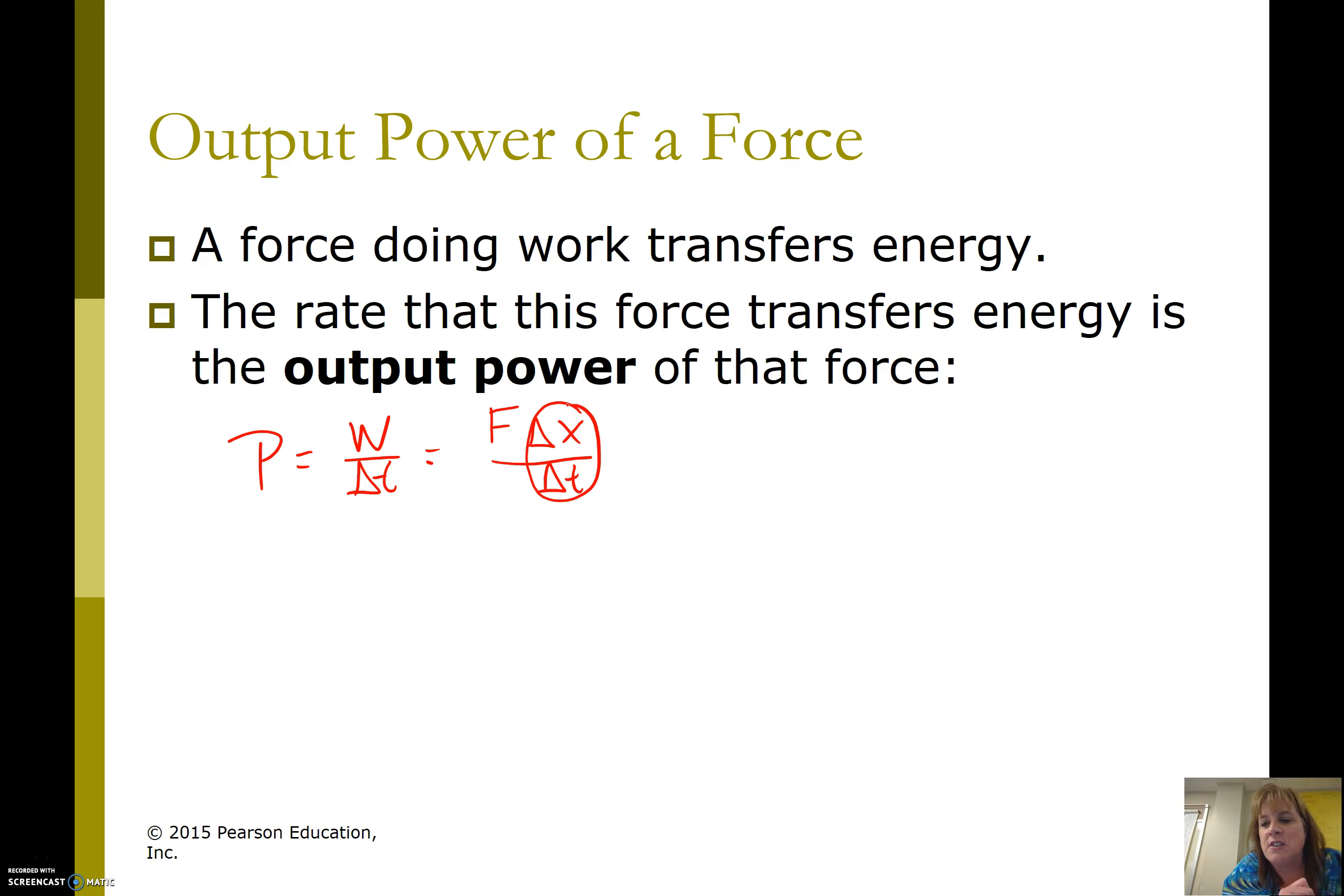What is the change in distance over change in time? That is the average velocity, or if it's constant velocity, that would be the velocity. So power, in terms of output power of a force, is the force applied times the average velocity. We have another equation for power: work over time, or force times velocity. It's best to use this if we have a constant velocity. If we don't, we would use average velocity.